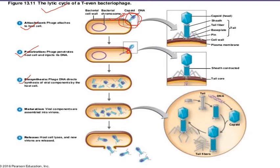The third step: the bacteriophage DNA uses the host bacterium's machinery to start synthesizing its own proteins and replicate its genetic material, producing all viral components. In the fourth step, maturation occurs — the newly formed components assemble into complete virus particles. After maturation, the bacterial cell lyses and releases the new phages.